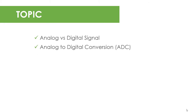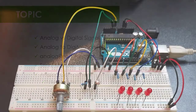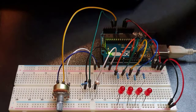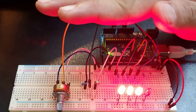You will use the analog read function of the Arduino, and the serial monitor of your Arduino IDE to display the data read from the analog input pins. And finally, you'll learn how to create a simple application that makes use of a potentiometer and a light-dependent resistor or LDR to control the behavior of your output LEDs. So, let's begin.